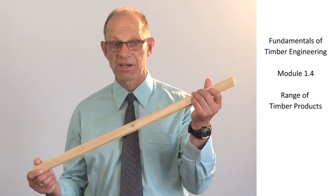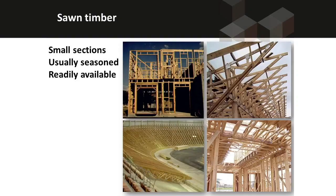Sawn timber is the most common use of timber — rectangular pieces used in structural systems. At the top left you can see wall systems with vertical timber elements. On the top right, they're used as roof elements, and on the bottom right as floor elements. In the lower left photo, they're used as part of a velodrome. In a velodrome, it's important that the floor has the right amount of flexibility so that if a rider comes off they won't injure themselves badly. Most velodromes around the world use timber flooring.